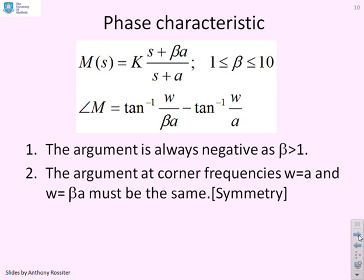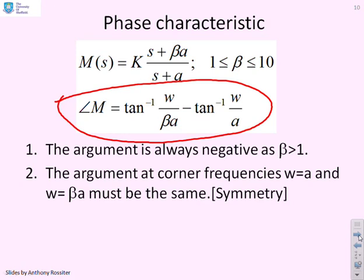The phase characteristic then. If we calculate the phase, here it is. It's tan to the minus 1 of omega over beta a minus tan to the minus 1 of omega over a. What do you notice? Given that beta is greater than 1 by definition for a lag. Well clearly, this argument is always less than 0 because tan to the minus 1 of omega over a must be bigger than tan to the minus 1 of omega over beta a.